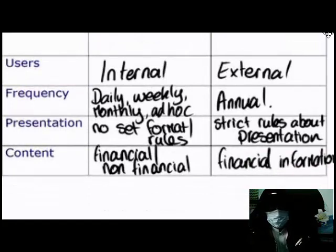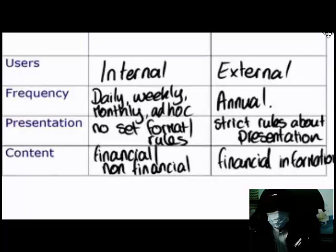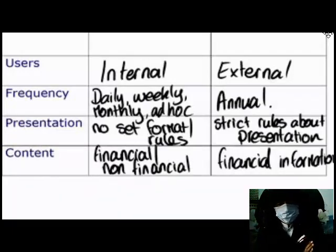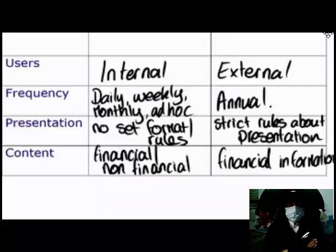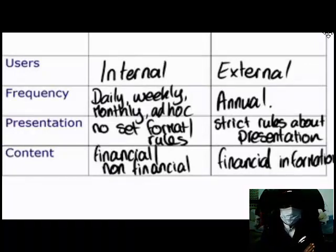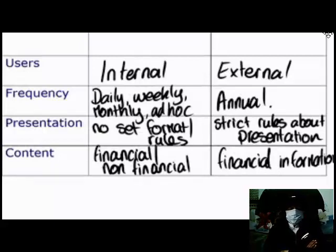A lot of financial information would be provided as part of management accounting — for example, the budget for the coming year. But other information like customer satisfaction surveys or employee surveys would be non-financial information. So we've looked at the key differences between management accounting and financial accounting. I've repeatedly used the word 'information' — let's consider that word for a few minutes. More specifically, we're going to consider what is good information, and to understand that we need to consider the distinction between data and information.